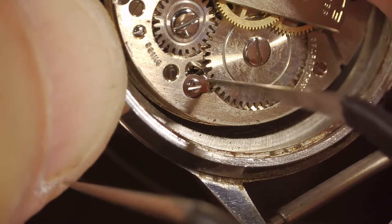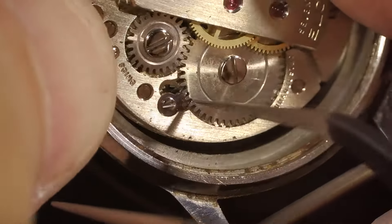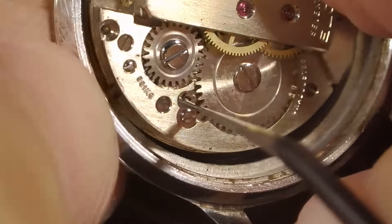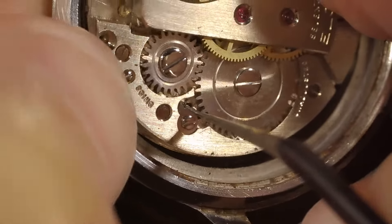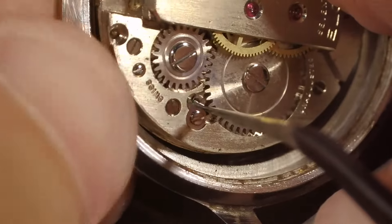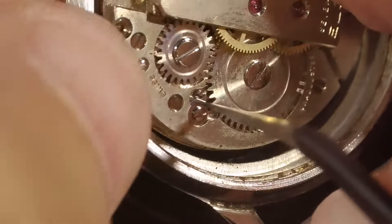This little sprocket is called the click and it keeps the mainspring from unwinding. But we want to let the power out of the mainspring to service the watch. So we're going to carefully disengage the click while we hold on to the winding stem and let the spring power down in a controlled way.